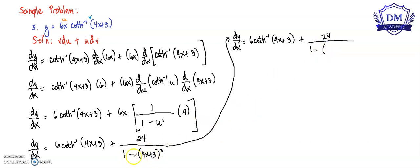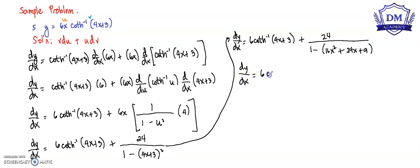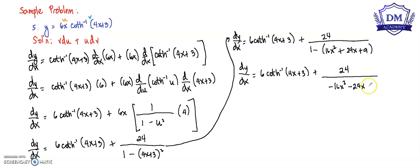Let us simplify. 4x plus 3 quantity squared expands to: 4x squared is 16x squared, plus 4x times 3 times 2 is 24x, plus 3 squared which is 9. So we have 6 times inverse hyperbolic tangent of 4x plus 3 plus 24 all over negative 16x squared minus 24x minus 8, because 1 minus 9 gives negative 8.